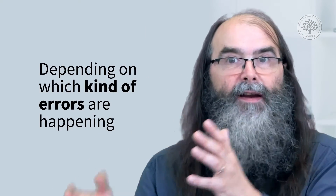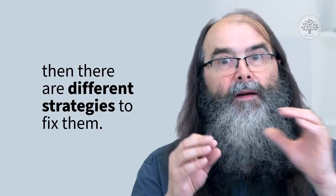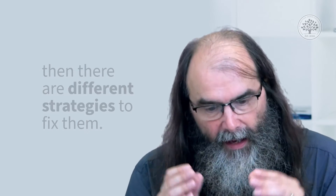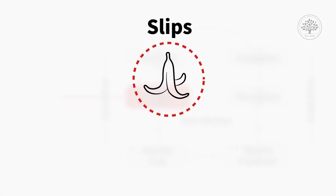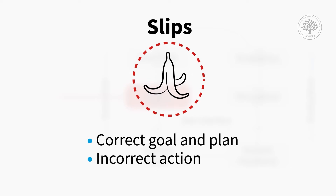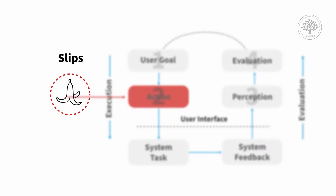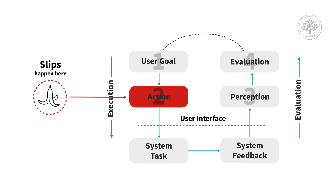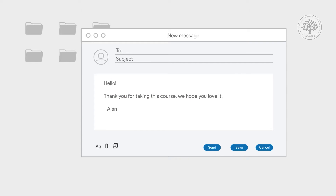Having understood this, we're now in a position to think about the best ways to fix these errors. Depending on which kind of error is happening, there are different strategies. If it's a slip — the person has the right understanding but the last bit of action goes wrong — then we want to look at low-level interface things to prevent that bottom-level interaction. We might space our buttons out further or make them larger so the person is less likely to select the wrong one.